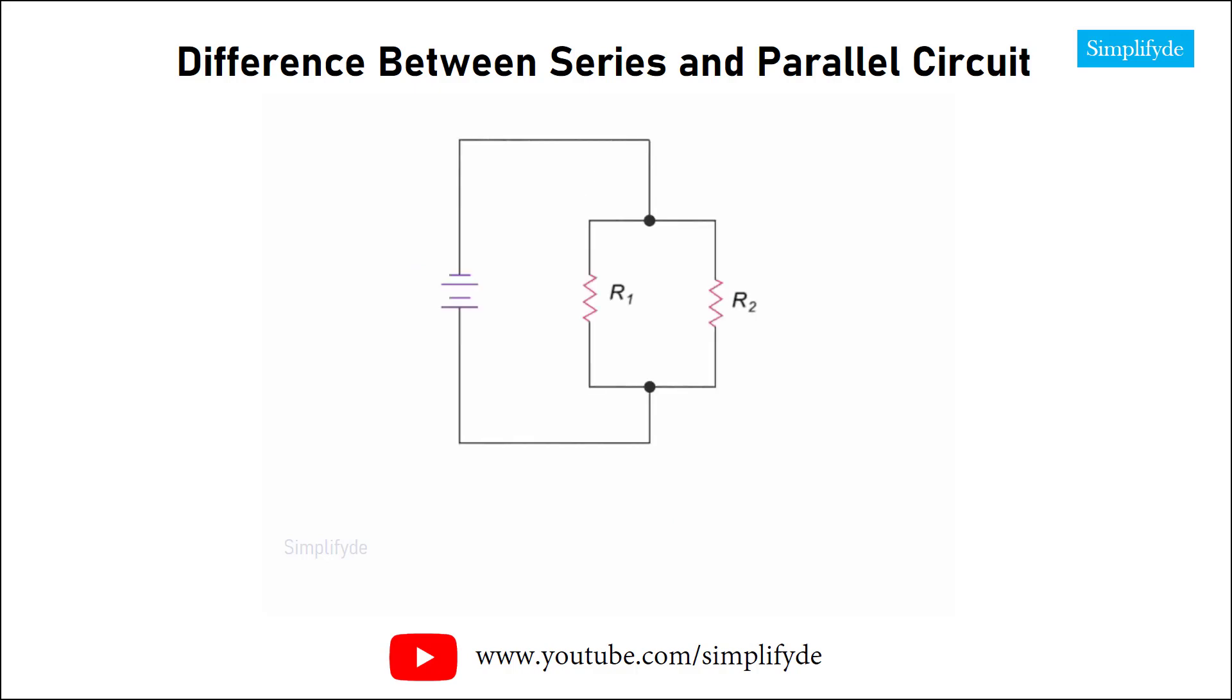Calculating the total resistance of resistors in a parallel circuit requires the use of the product over sum equation. In this parallel circuit, if R1 is 50 and R2 is 80, then the combined or equivalent resistance of the two resistors would be 50 times 80, or 4000 divided by 130, which is 30.7 ohms.